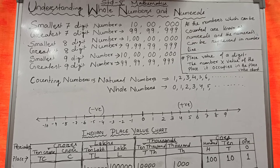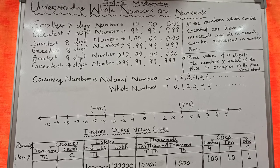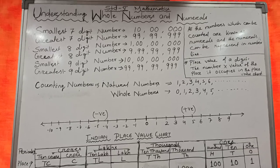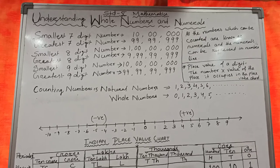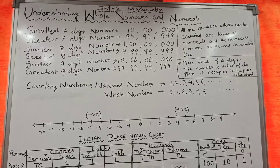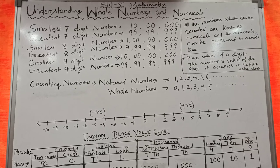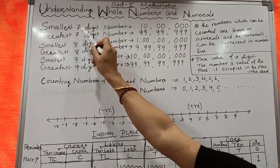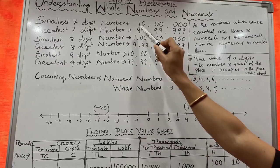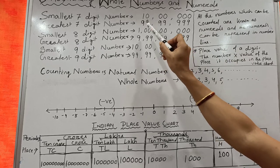In Standard 4, we have already studied 1 to 6 digit numbers. All of you know the greatest 6 digit number. The greatest 6 digit number is 9,99,999. So the next number is the smallest 7 digit number. The smallest 7 digit number is 1 and 6 zeros, that is 10 lakh.